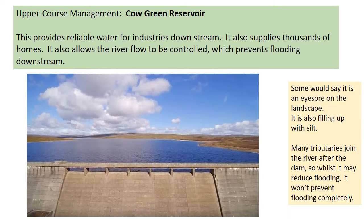An example in the upper course of the River Tees is Cow Green Reservoir. This large reservoir built behind the dam provides reliable water for industries such as some of the factories downstream. It also supplies thousands of homes with a reliable source of water, and helps to control the flow of the river, which prevents flooding downstream.